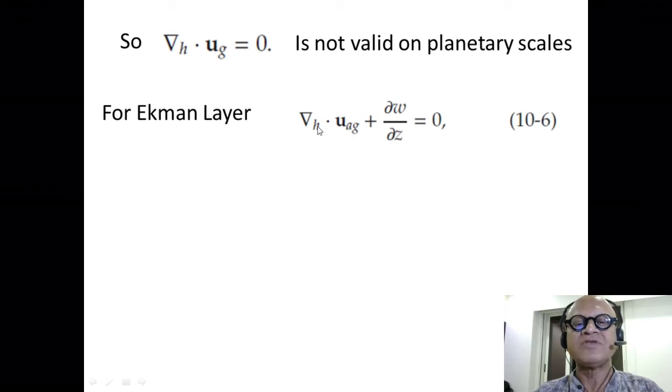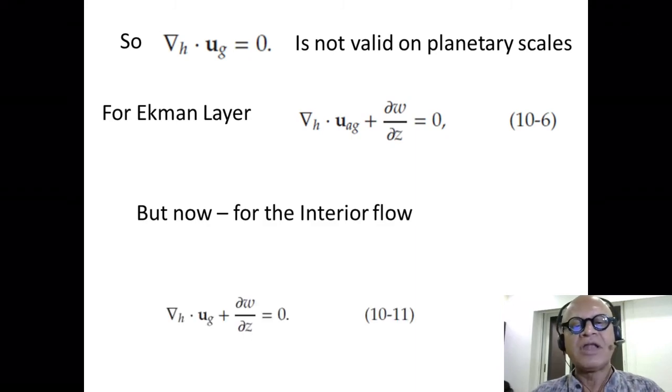So, for the Ekman layer, we had written it in terms of the a-geostrophic divergence balancing the Ekman pumping. But now, for the interior flow, we are going to take the Ekman pumping that's putting fluid into the interior here and we're going to write divergence of geostrophy plus d omega dz equals 0. So, the horizontal divergence, this was our inviscid barotropic fluid, frictionless and so on, where we said geostrophic flow is non-divergent in, you know, this is a full vector, UVW, right? Now, we are saying on planetary scale, that's not true anymore.